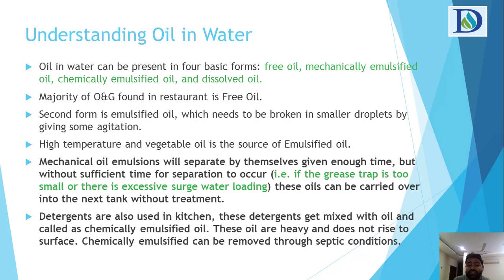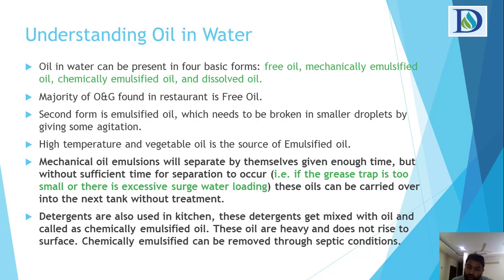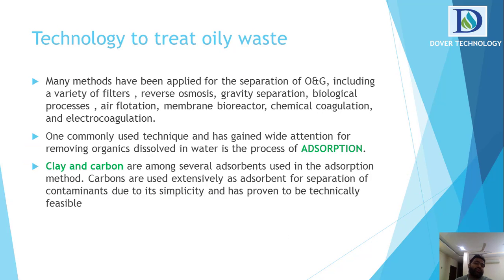Detergents are also used in kitchens, and these detergents get mixed with oil to form what is called chemically emulsified oil. When utensils are washed using detergents, those detergents mix with the wastewater and then go into the wastewater chamber.